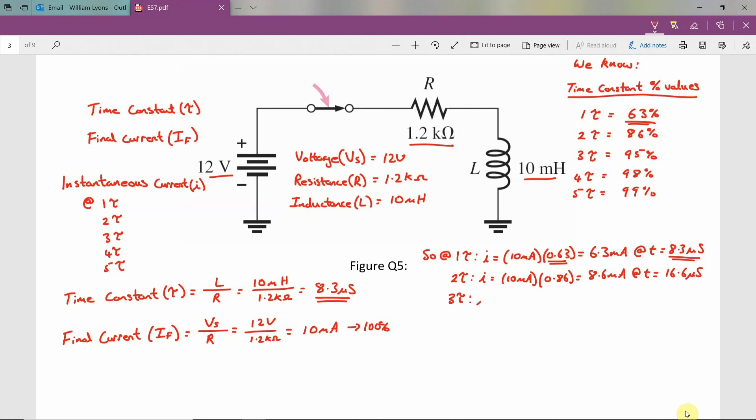At 3τ, I is equal to 10 milliamps multiplied by 0.95, which results in 9.5 milliamps at a time equal to 24.9 microseconds.